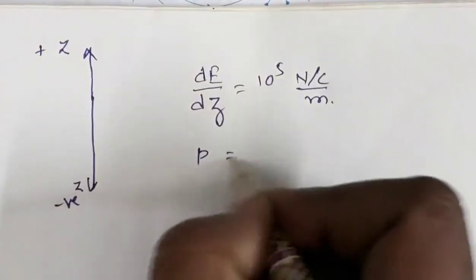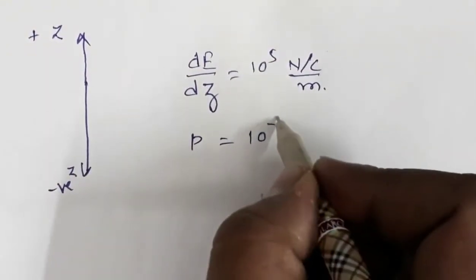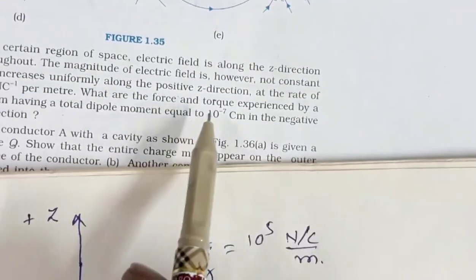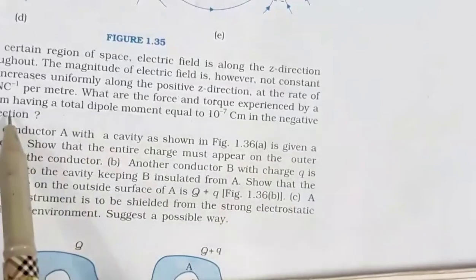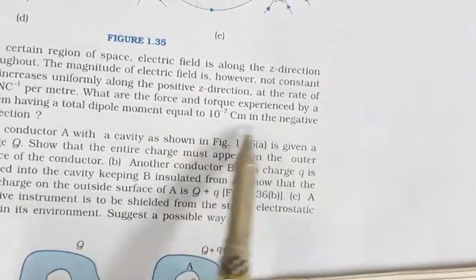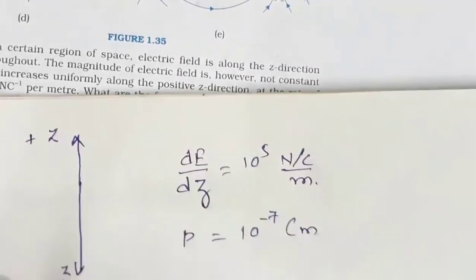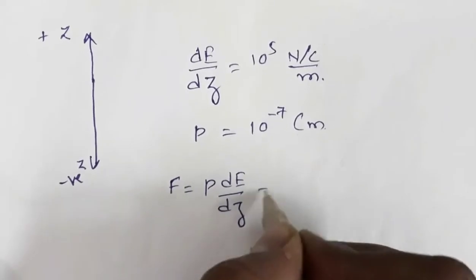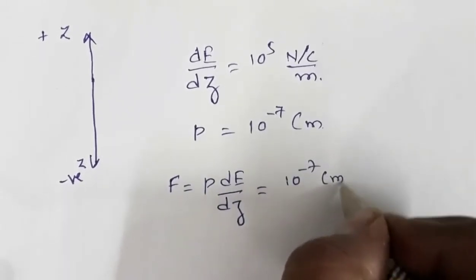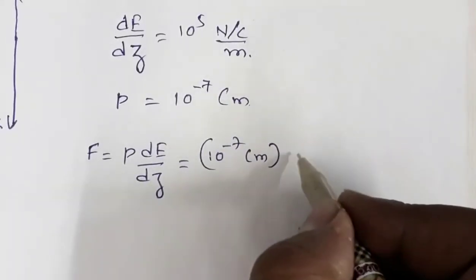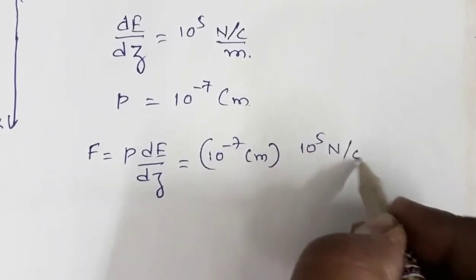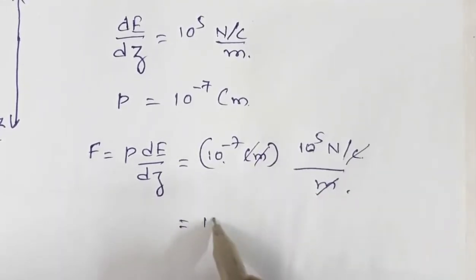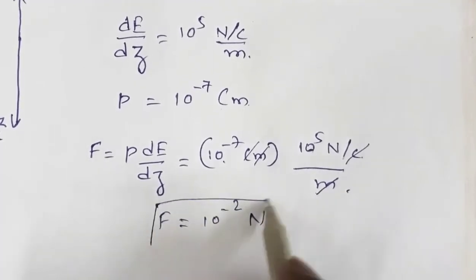The dipole moment P is 10⁻⁷ coulomb meter directed along the negative Z direction. Using the formula F = P × dE/dz, the force is 10⁻⁷ coulomb meter multiplied by 10⁵ Newton per coulomb per meter. The units cancel out, giving a force of 10⁻² Newton.